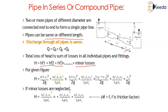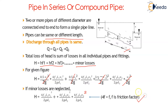If all the minor losses are neglected, we get head loss only due to friction: H = 4F1·L1·V1²/(2g·D1) + 4F2·L2·V2²/(2g·D2) + 4F3·L3·V3²/(2g·D3). Note that sometimes 4F is also written as F, known as the friction factor.